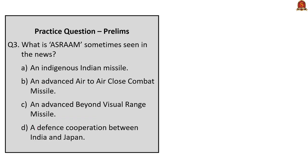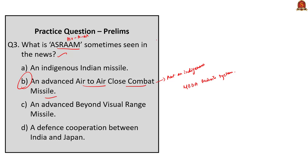The third question asks what is ASRAAM, sometimes seen in the news. The correct answer is Option B: an advanced air-to-air close combat missile. ASRAAM is not an indigenous missile — it was developed by the European company MBDA Missile Systems. Its full form is Advanced Short Range Air-to-Air Missile, with a range of just over 25 kilometers, making it a within-visual-range close combat missile where the combatants can see each other.